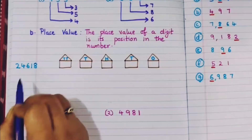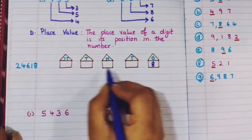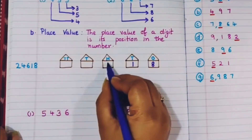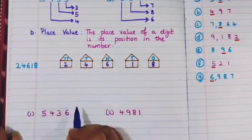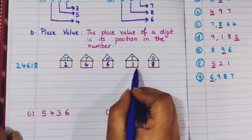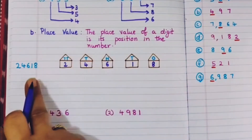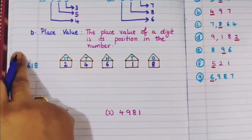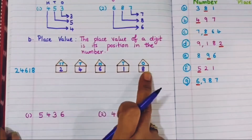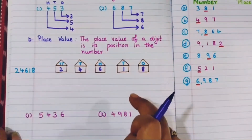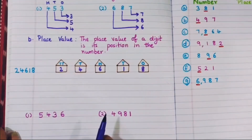Let's understand this with the number 24618. Here, 8 is in the 1's place, 1 is in the 10's place, 6 is in the 100's place, 4 is in the 1000's place, and 2 is in the 10000's place. Each digit has its particular house in this number, and the position where they are placed is their place value.